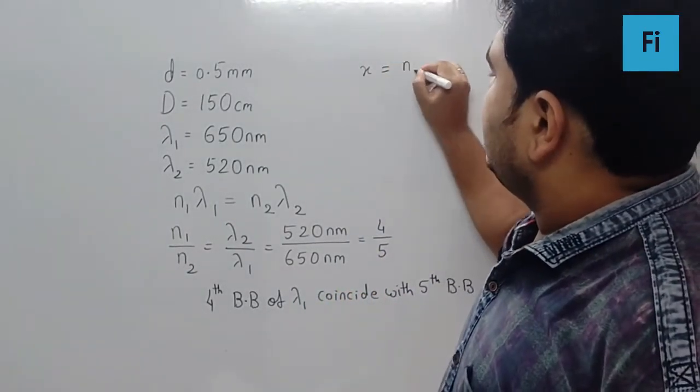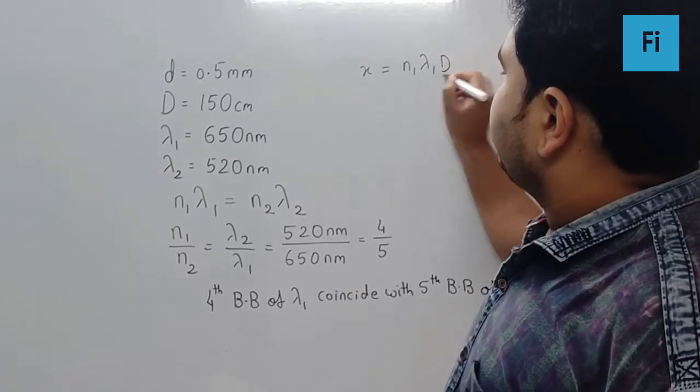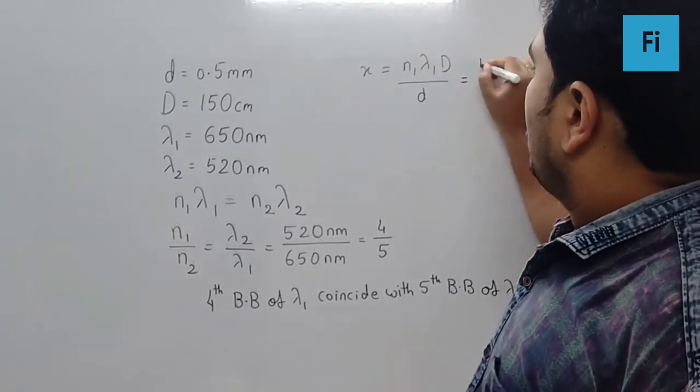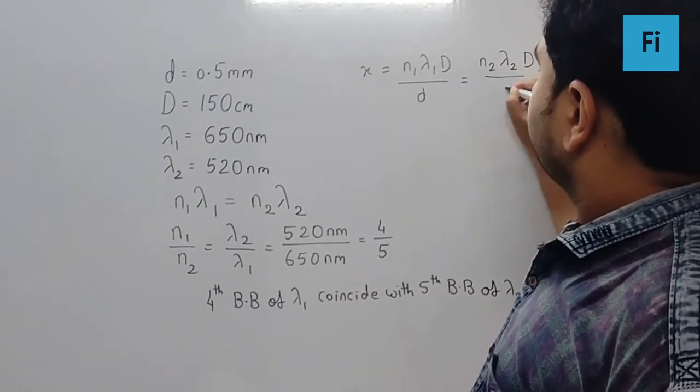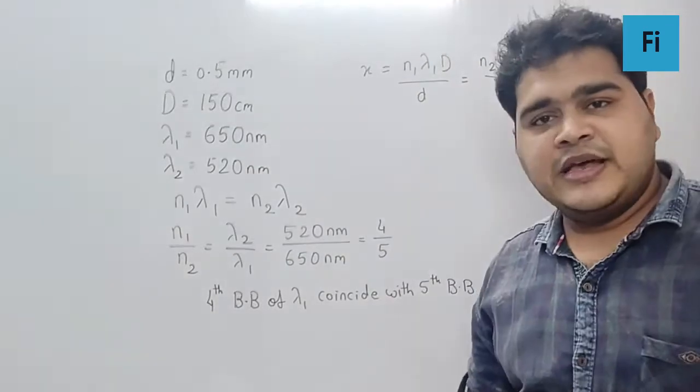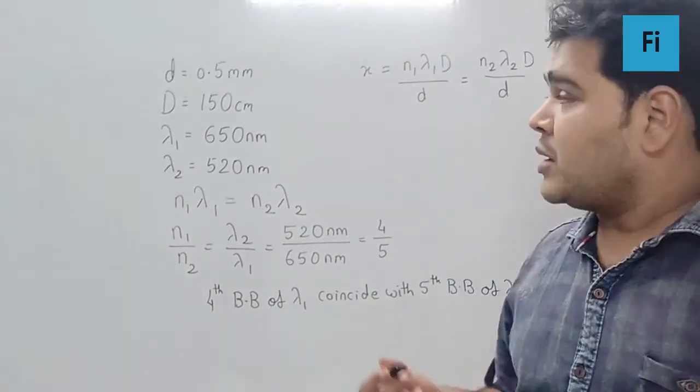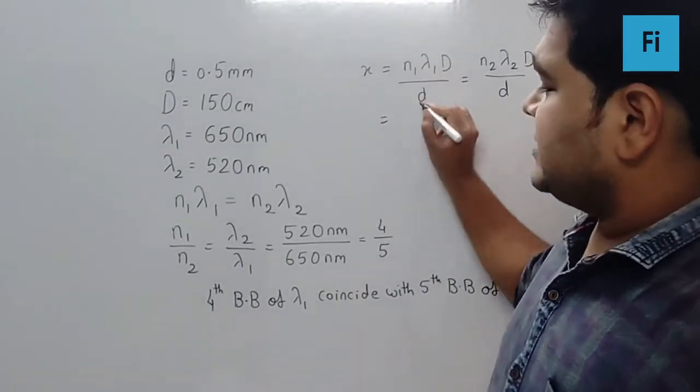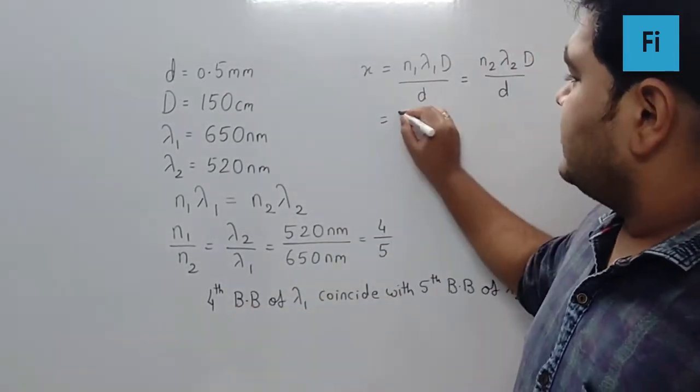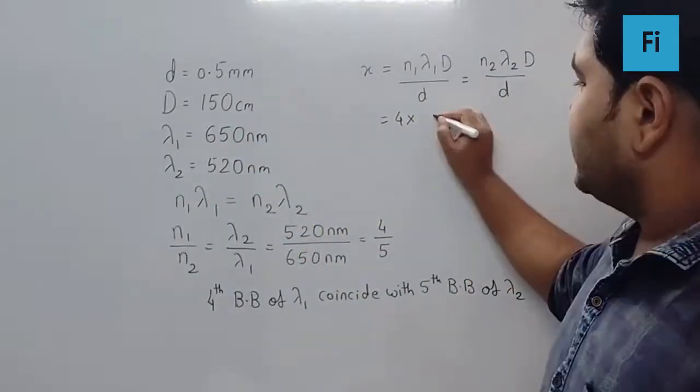We have to take x is equal to n1 lambda 1 capital D by small d, or n2 lambda 2 capital D by small d. You can take either one. The answer will come as same. So if I go for the first case, n1 is 4.